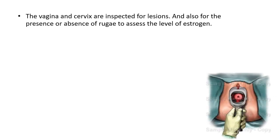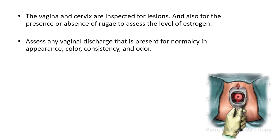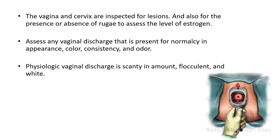The vagina and cervix are inspected for any lesions such as cervical erosion or cervical ectopy. You can even find Nabothian cysts — which are physiological on the ectocervix — and also notice the presence or absence of rugae to assess the level of estrogen. Assess any vaginal discharge that is present: a normal discharge is mucoid, but if you notice any greenish frothy discharge, curdy white discharge, or foul-smelling mixed discharge — or even if it is odorless — it can be pathological. Physiological vaginal discharge is scanty, flocculent, and white; normal cervical mucus is clear and slightly sticky.